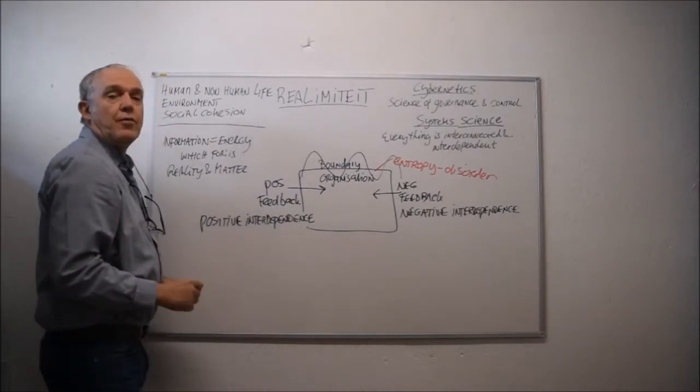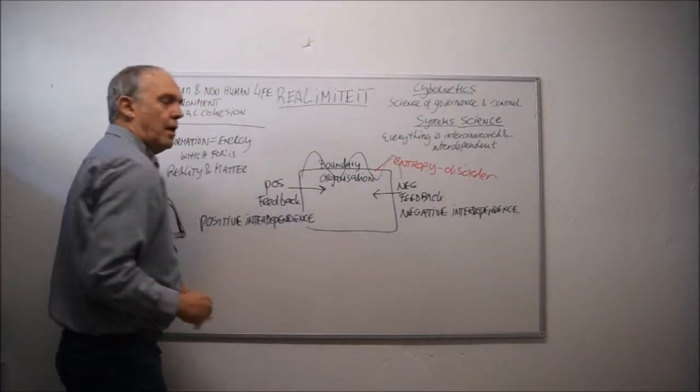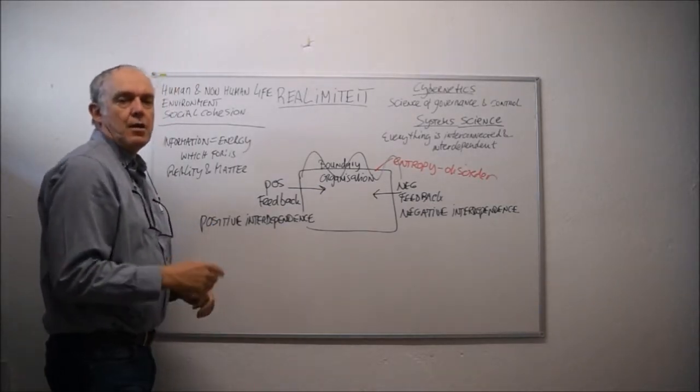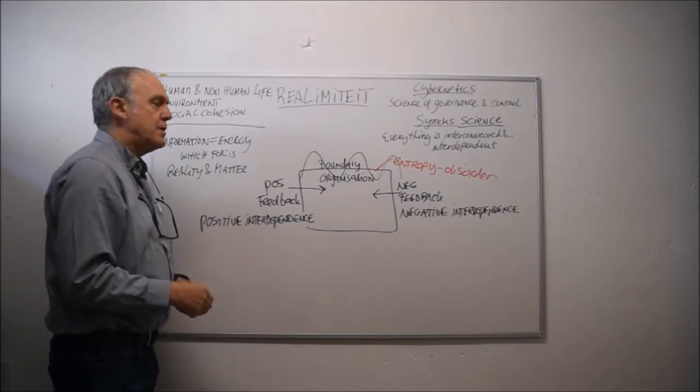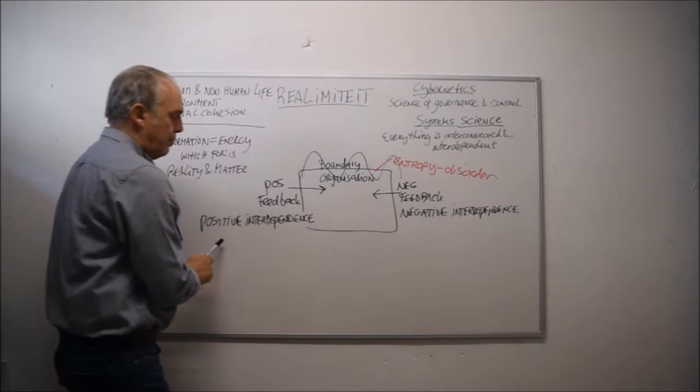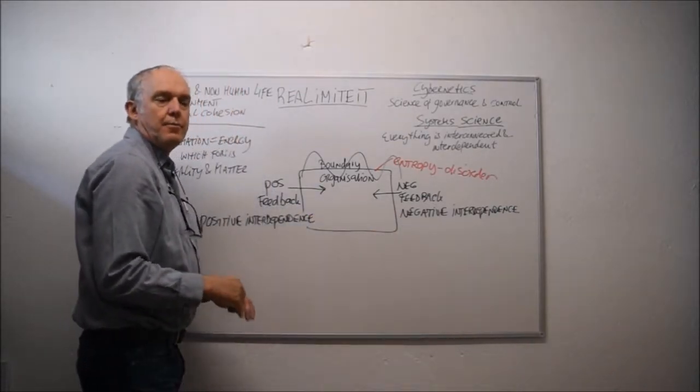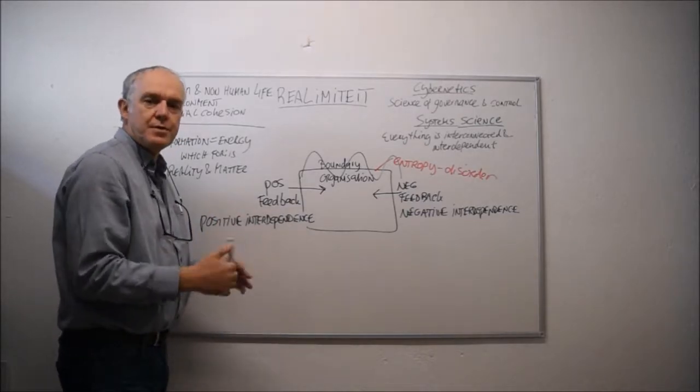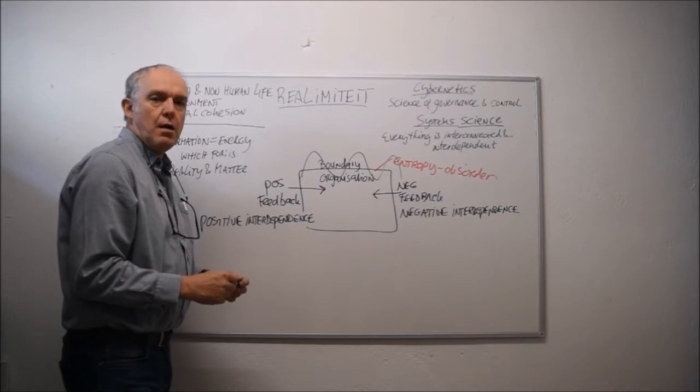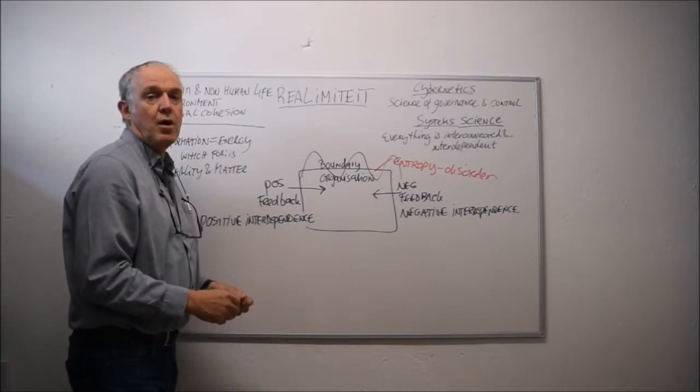The functioning of an organization needs information. And we can ask ourselves, is our organization, is our industry, is our political ideology or process either negative interdependent or positive interdependent? Negative interdependent means that the goals, the purposes of the organization, the political process of industry may benefit some, but at the cost of others.